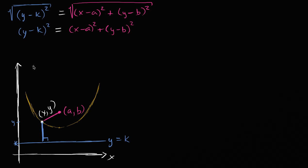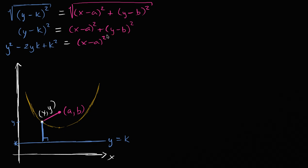Now I want to end up with just y on the left-hand side, and x's, a's, b's, and k's on the right-hand side. First, let's expand the y-containing expressions. The left side becomes y² minus 2yk plus k², and the right side becomes (x minus a)² plus y² minus 2yb plus b². We can then subtract y² from both sides, which simplifies things nicely.